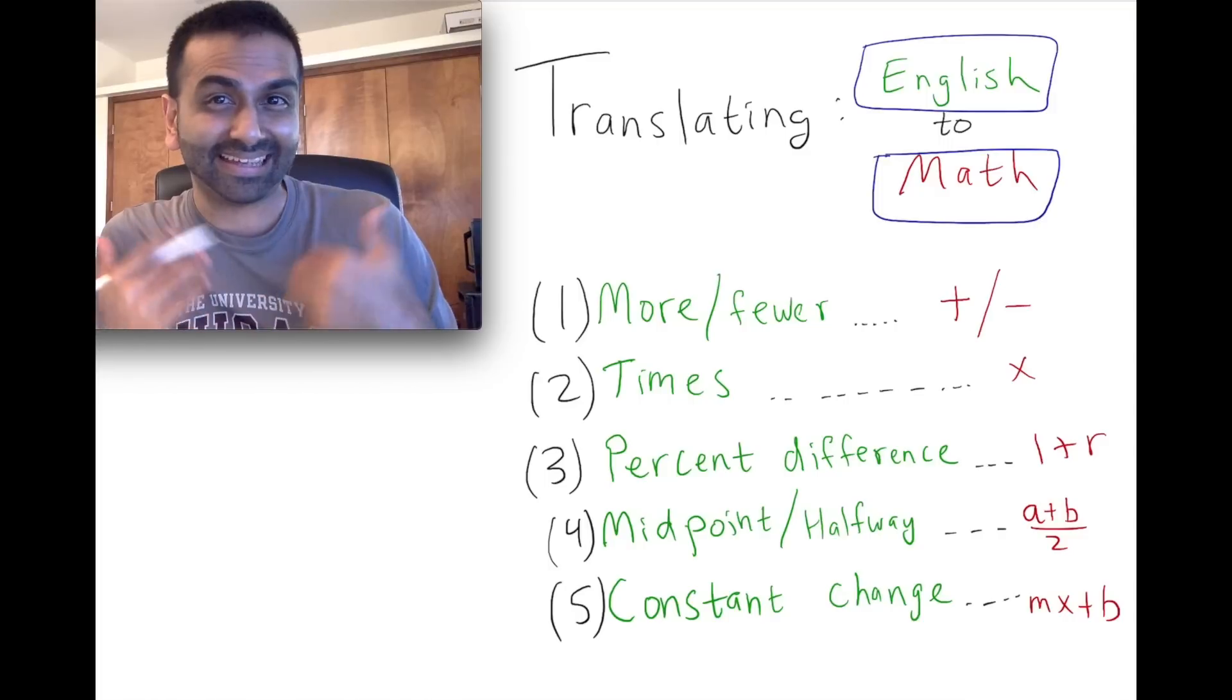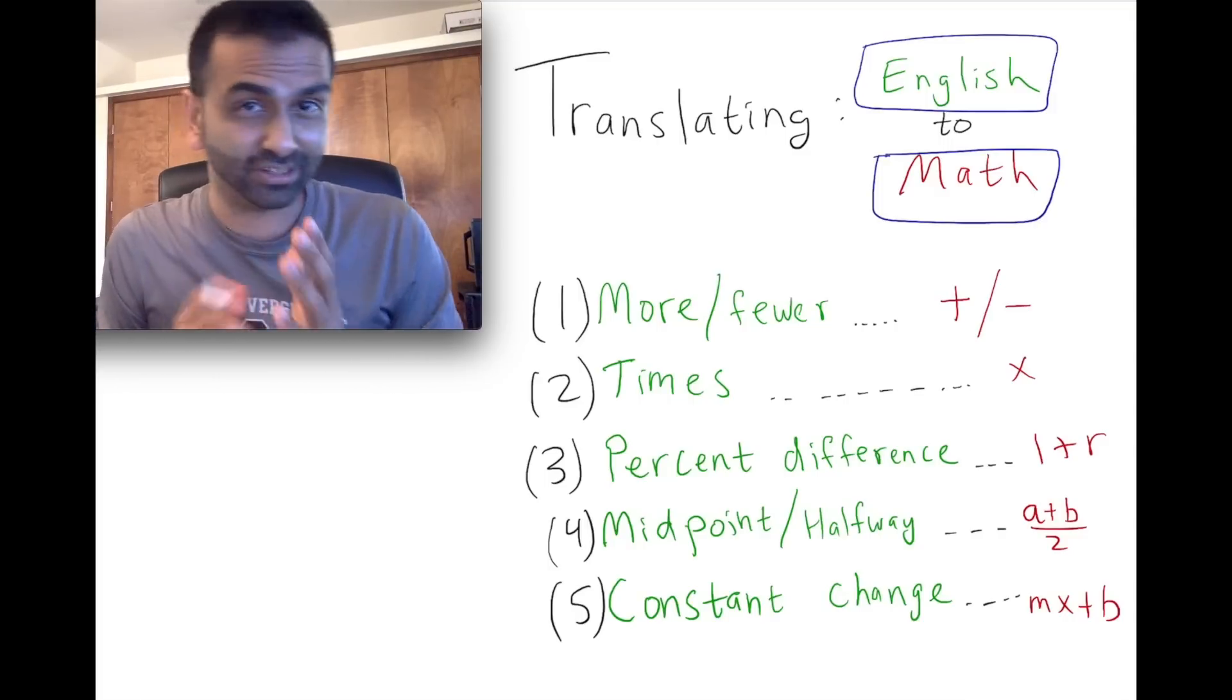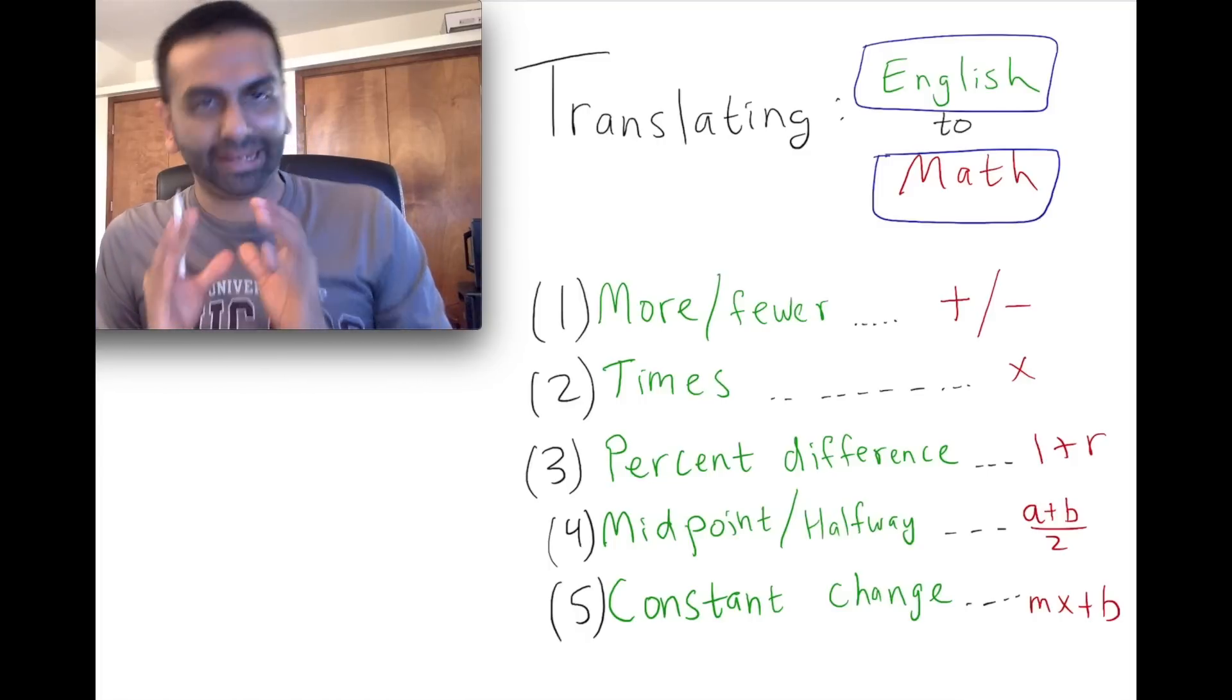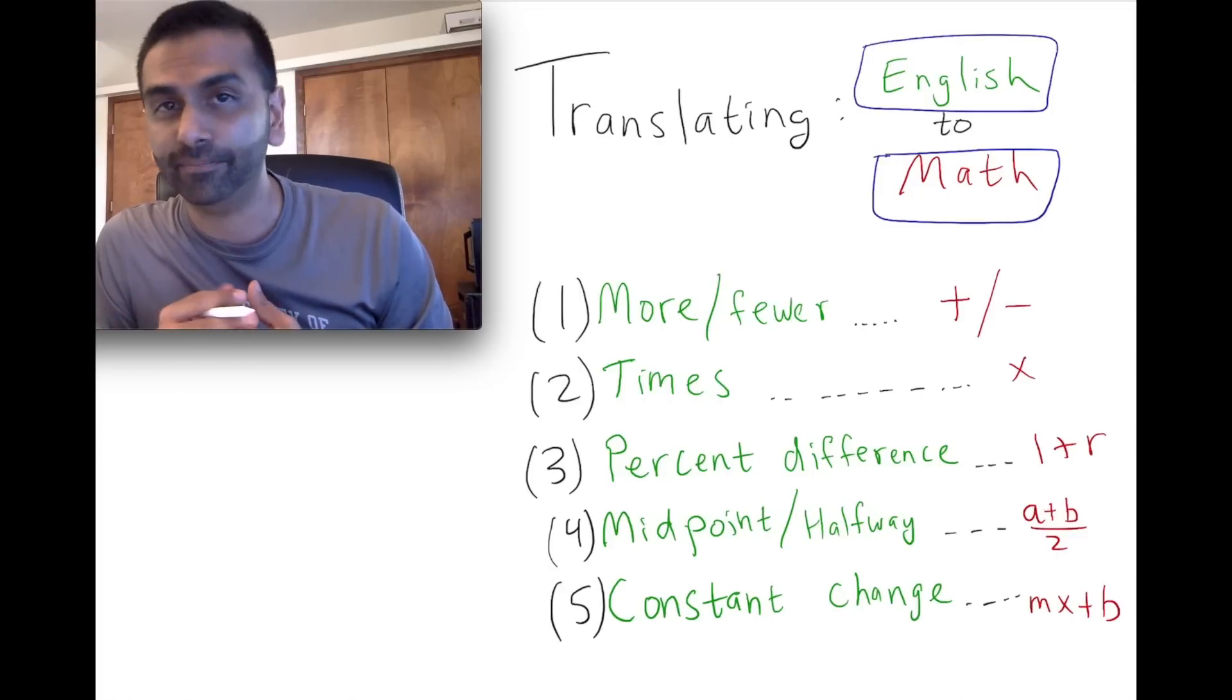Basically this is the dictionary for how you translate between these two languages, English and math. In English, if something ever says the word 'more,' like Bob has four more apples than Jim,